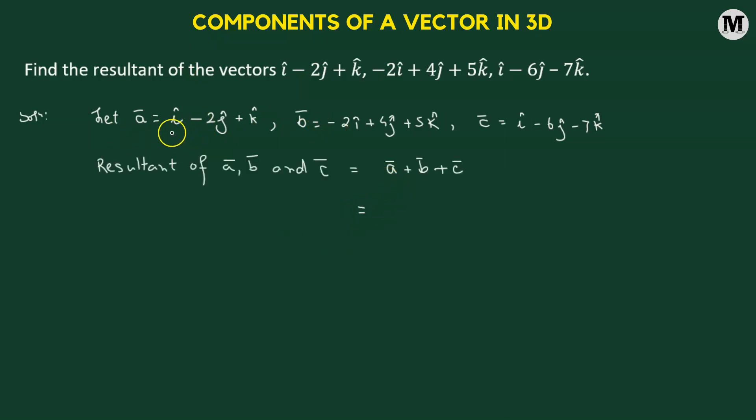So here we have I cap added to negative 2I cap. So that will be negative I cap and negative I cap added to positive I cap will be simply zero I cap.